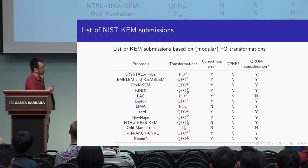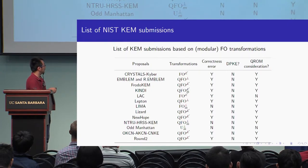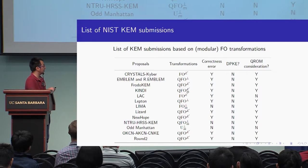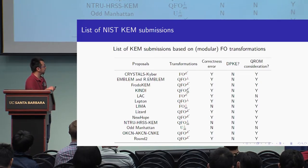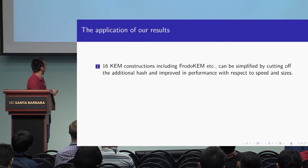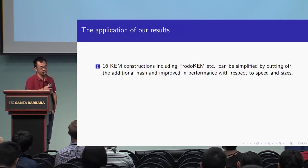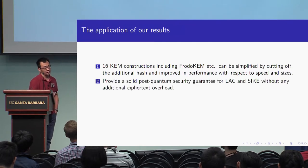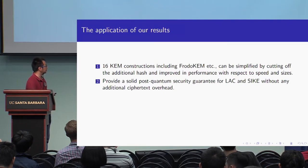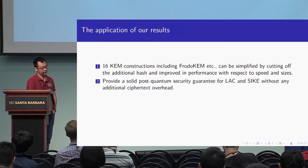We have reviewed all modular transformations and FO transformations used in the NIST submissions. We show which transformation each scheme previously used, whether it has correctness error, whether the public key encryption is deterministic, and whether they consider the random oracle model. Our conclusion is that 16 KEM constructions — including FrodoKEM — can be simplified by cutting the additional hash random oracles, giving improved performance in terms of speed and size. We also provide solid quantum security guarantees for two submissions, LAKE and Saber, without any additional ciphertext overhead.